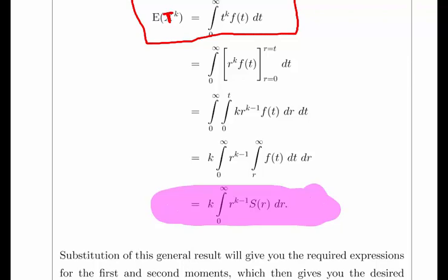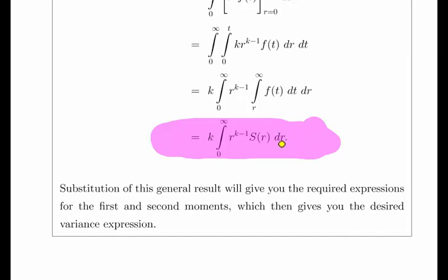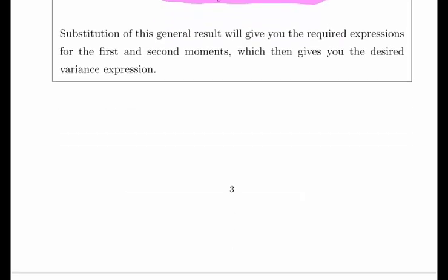This is a very important expression here. The moment has index k that will be 1, 2, 3, and so on. The second moment would be k = 2, so 2 times r^(2-1) = 2r times the survival function. In the first instance when k = 1, it's just 1.